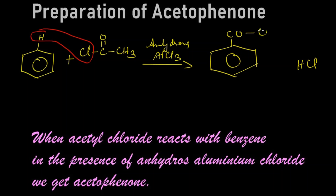We get a C=O with CH3 group attached to the benzene ring. The name of this compound is acetophenone. So, benzene reacts with acetylchloride to give acetophenone.